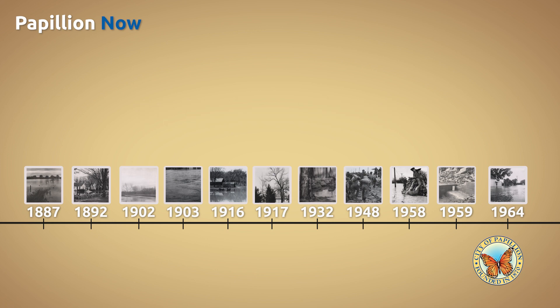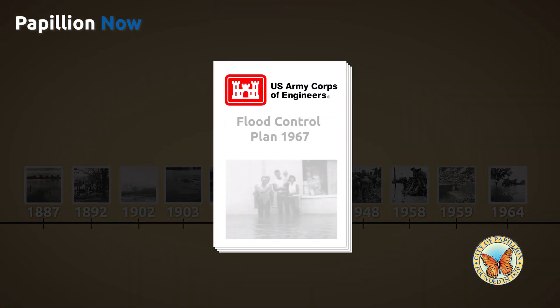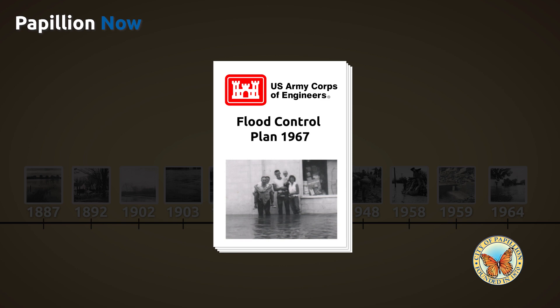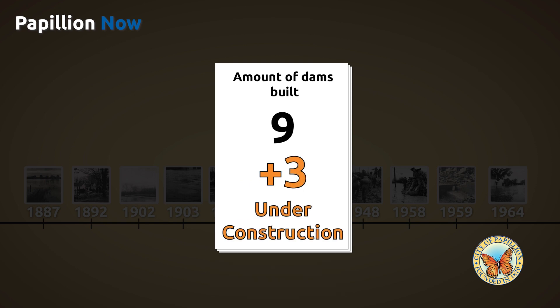However, none of them were as damaging as 1964. Enough was enough. The U.S. Army Corps of Engineers drafted a flood control plan that would be presented in 1967. As a result of the plan, nine dam sites have been built and three more are currently under construction, helping to mitigate the risk of flood damage by Papillion Creek.